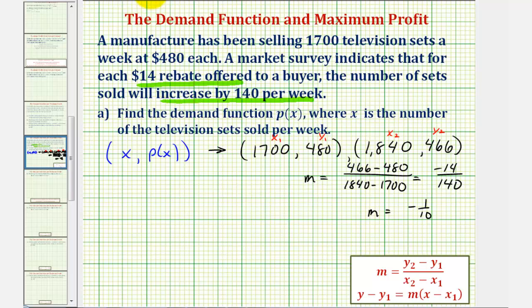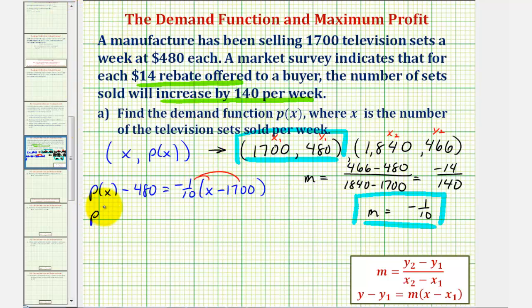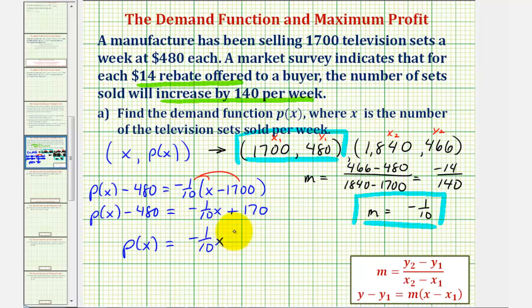Now to find the equation of P of X, we use this slope and one of our two points. Using point-slope form, we have P of X minus 480 equals negative one-tenth times the quantity X minus 1,700. Solving for P of X: P of X minus 480 equals negative one-tenth X plus 170. Adding 480 to both sides gives us the demand function P of X equals negative one-tenth X plus 650.